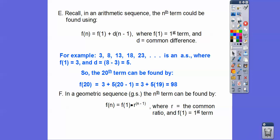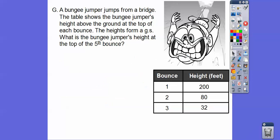In a geometric sequence — I'm going to call it GS from now on — the nth term can be found by taking your first term and multiplying it times R to the (n minus 1) power. Remember, order of operations says we have to do exponents first.